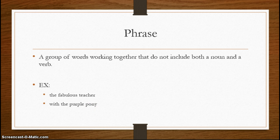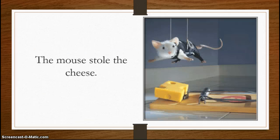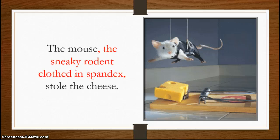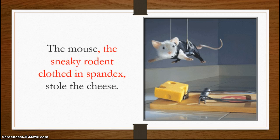Let's look at some examples in context. Here is a sentence: 'The mouse stole the cheese.' If I add some phrases to my sentence, I'm going to have a much clearer picture for my audience. So instead of saying 'the mouse stole the cheese,' I might say 'the mouse, the sneaky rodent clothed in spandex, stole the cheese.' Now I have details that describe the mouse. This cannot stand alone — 'the sneaky rodent clothed in spandex' doesn't have a verb in it, just a noun. So it's a phrase, not a clause.